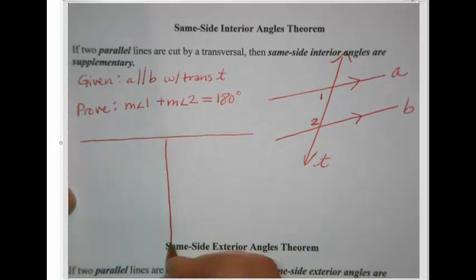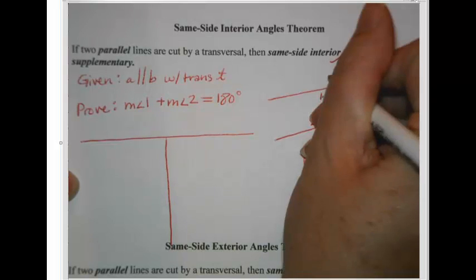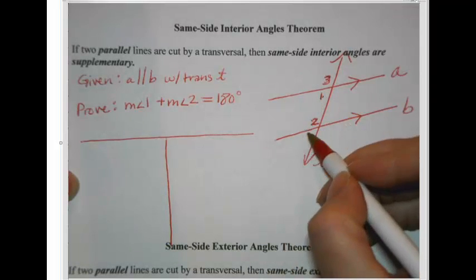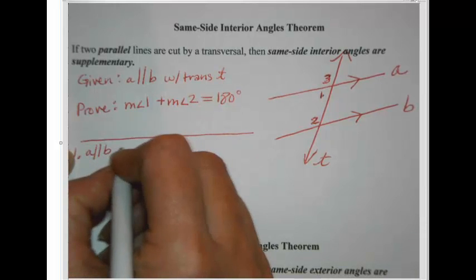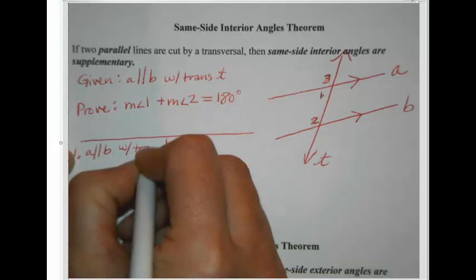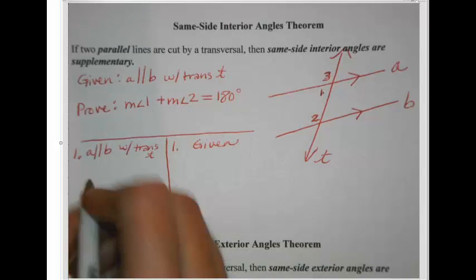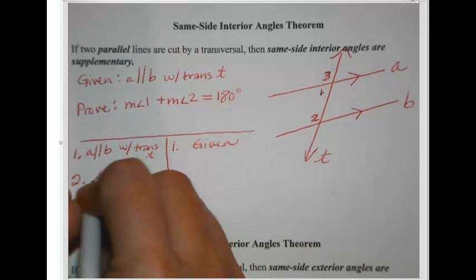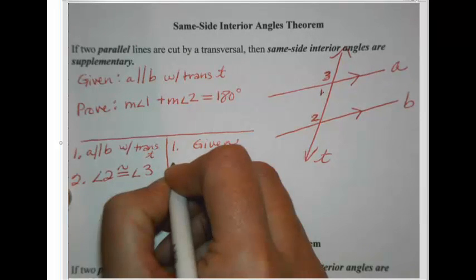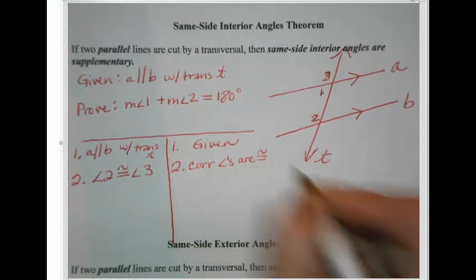Let's get the chart set up. The strategy is to put an angle 3 in there and make angle 3 correspond to either of your two labeled angles. I'll put it corresponding to angle 2. The first line: A parallel to B with transversal T — that's our given. Then I'll say angle 2 and angle 3 are a match because of the corresponding angles postulate. Corresponding angles are always congruent when we have parallel lines.